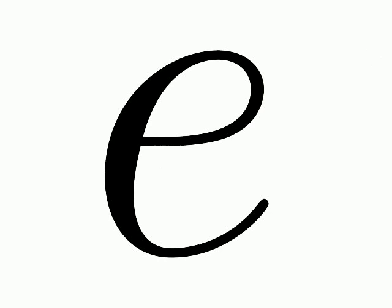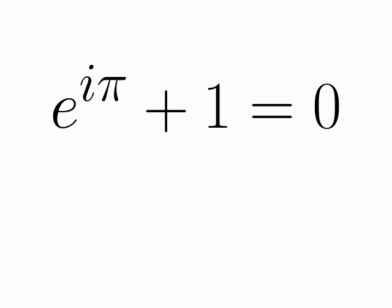2.71828183 is approximately the value of the constant e. It's one of five constants in the identity: e to the i pi plus 1 is 0, you'll see.